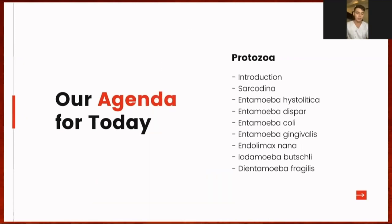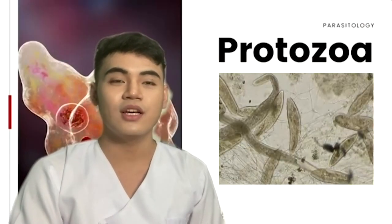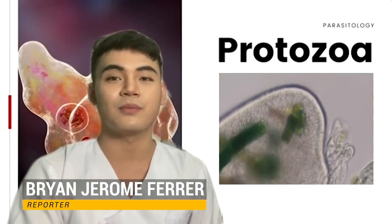We will proceed by pointing out some important details, such as the generalities of organisms under this classification. Next, we will proceed to the specific genera under this classification, specifically Protozoa, Sarcodina, Entamoeba, Endolimax, Iodamoeba, and Dientamoeba.